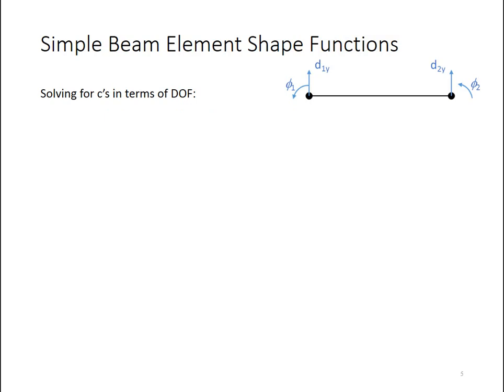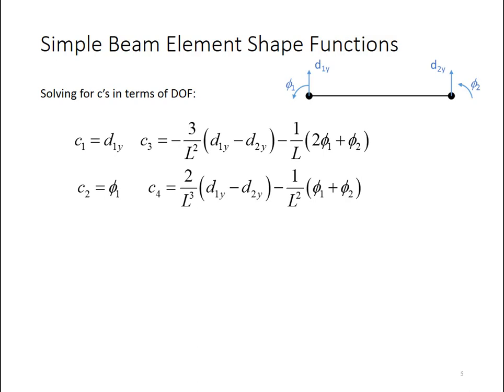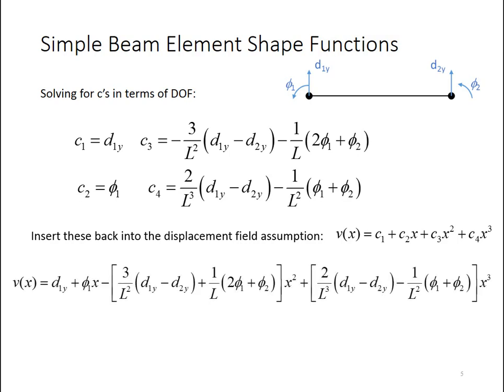I can write that out in matrix form or not, as you prefer, but then I can go through and evaluate this function with respect to finding out what c is in terms of the degrees of freedom. Using whatever solution method you prefer, you can solve that system of four equations and four unknowns, and you find out what c1 through c4 are equal to in terms of L and the degrees of freedom d and phi.